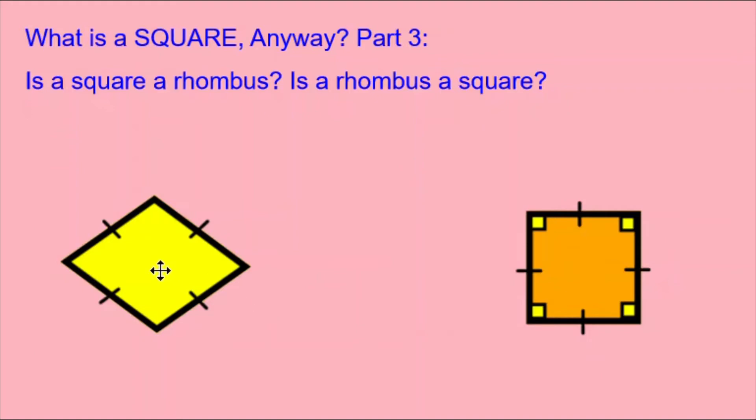And over here on the left, I have a yellow rhombus, which also shows that it has four congruent sides. But it does not have 90 degree angles in the corners, or at least it does not necessarily have them.